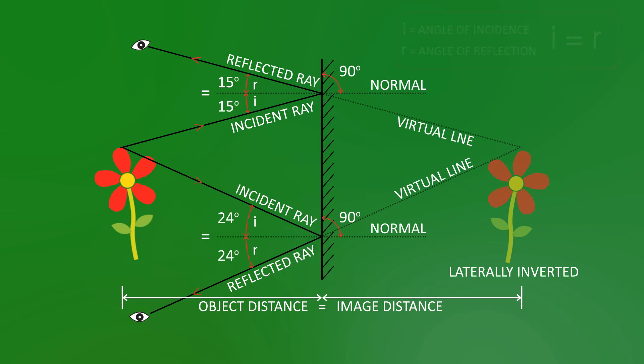We then always trace back our reflected rays with dotted lines to see where our virtual image is formed. Our virtual image will always be laterally inverted. And the object distance will equal the image distance.